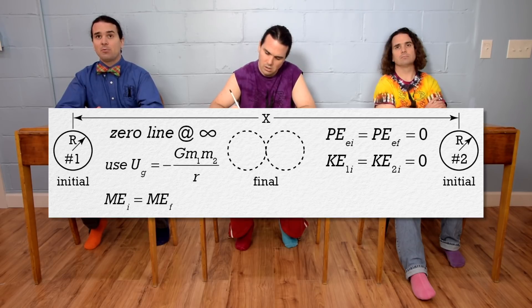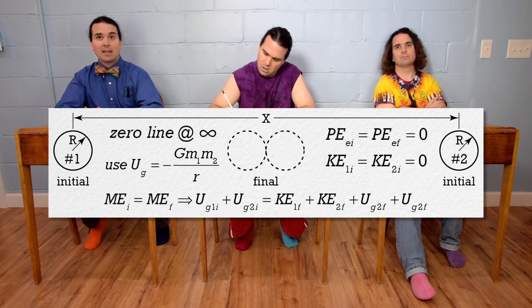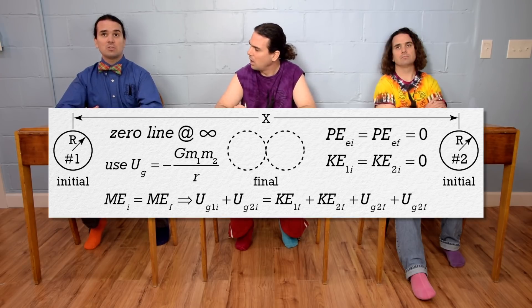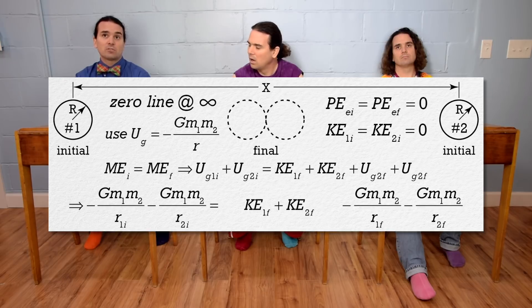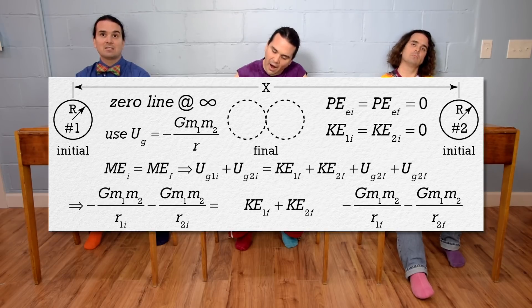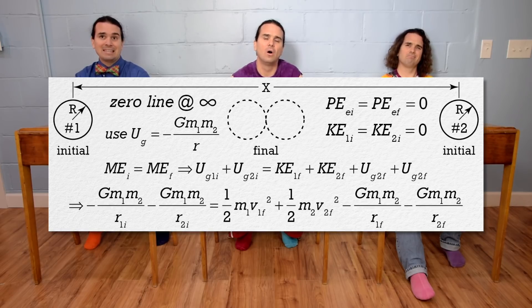At the initial and final points, both spheres have universal gravitational potential energy, and at the final point, both spheres have kinetic energy. Now we can substitute in for each universal gravitational potential energy: negative universal gravitational constant times mass 1 times mass 2 divided by their respective values for the distance between the centers of mass of the two spheres, and for each kinetic energy we can substitute in one half times their respective masses and their respective velocities squared.